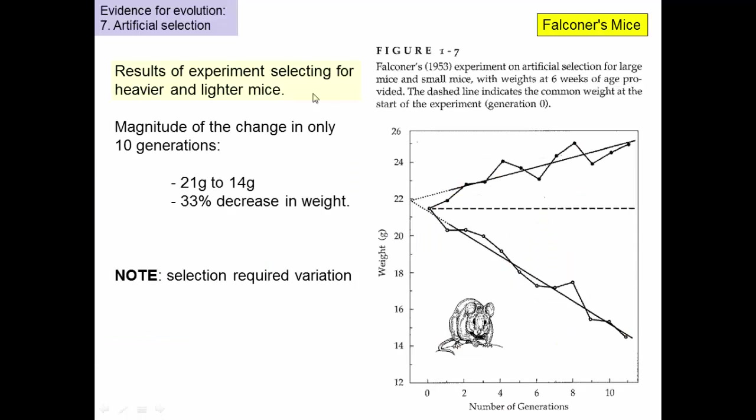Here's our more technical example. This is the results of selection for heavier and lighter mice. There's a guy called Falconer in 1953. What he did is he took a bunch of mice, weighed them when they were at six weeks, and he took the heavier ones and mated them with each other. Then each generation, he weighed them and took the heaviest ones and mated them. Over time, they got heavier. He took the lightest ones and mated them with each other, and generation by generation, they got lighter. In fact, in only 10 generations, that's not long, he got mice that started off at 21 grams to get all the way down to 14 grams. That's a 33% decrease in weight.